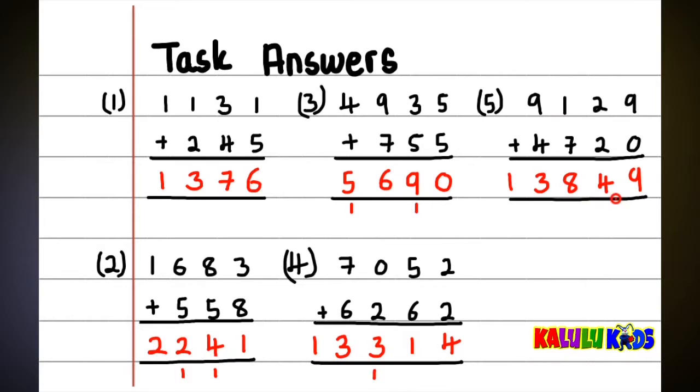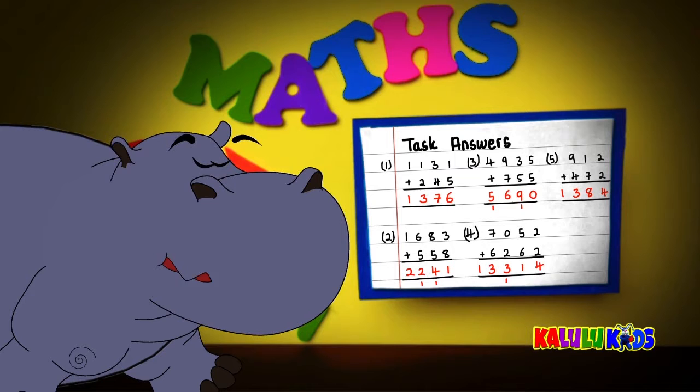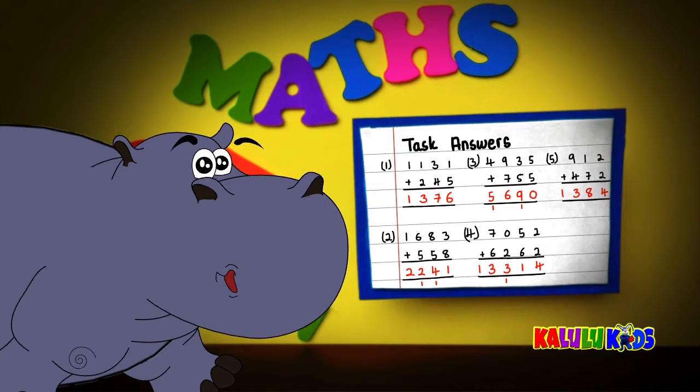Well done if you got everything right. If you didn't, don't despair. Go back to the example. Look carefully at the example, and then go through the independent tasks again. You will finally get it.